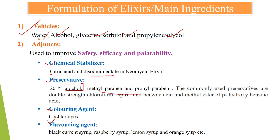Methyl paraben, propyl paraben, double-strength chloroform spirit, and benzoic acid are used as preservatives. Coal tar dyes are used as coloring agents. Flavoring agents include black currant syrup, raspberry syrup, lemon syrup, and orange syrup, which are used to prepare the elixir. These are the main ingredients.